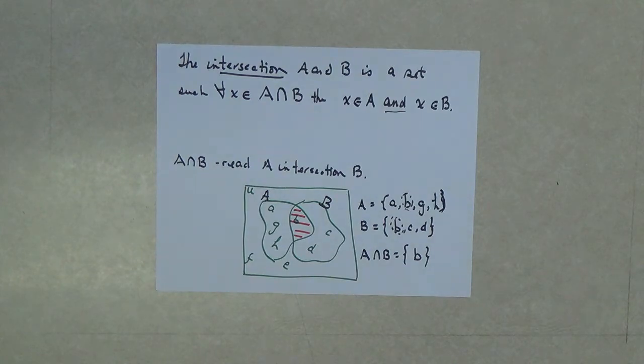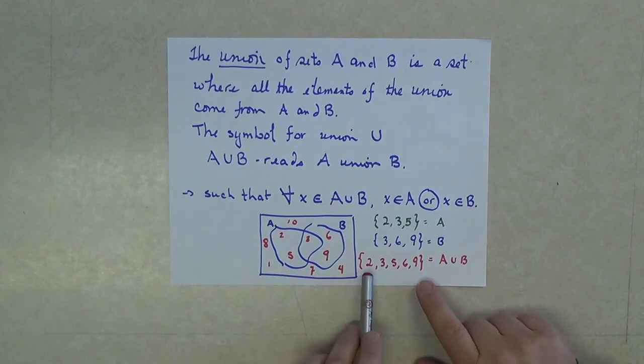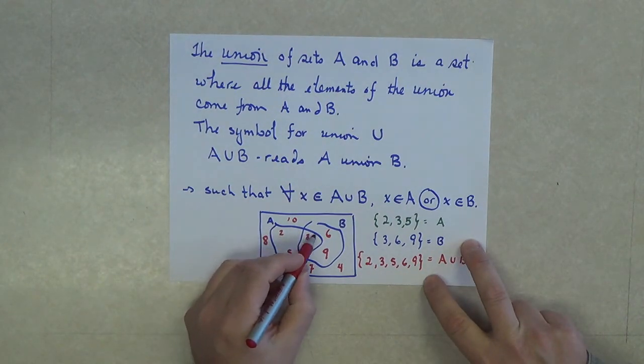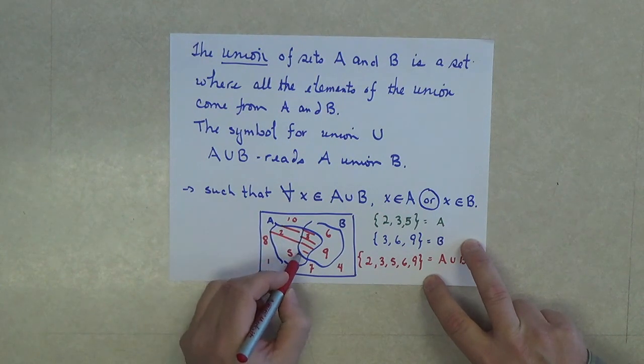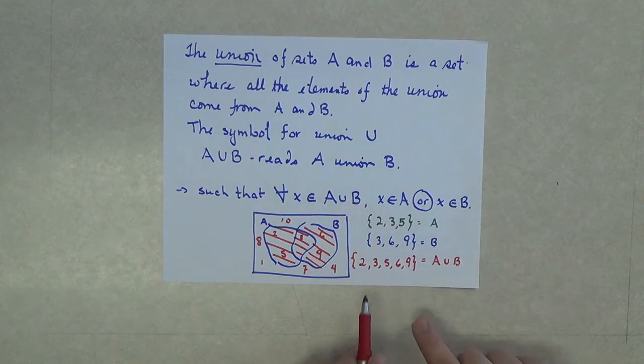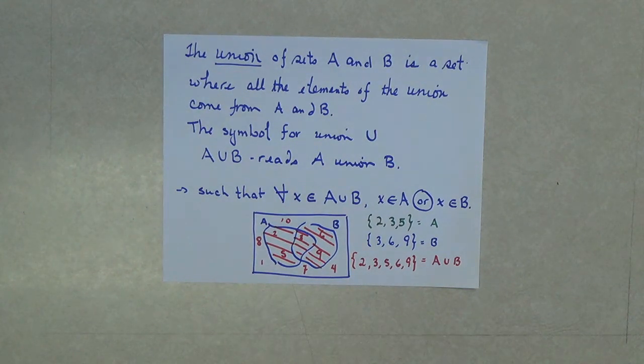Let's bring the previous sheet up and look at the Venn diagram where we were talking about unions. We found the union to be 2, 3, 5, 6, and 9. The union is not just this piece in here, though it does contain that. It's also all of set A and all of set B. It's like bringing both of them together. Some students refer to it as the combination, although it's not technically correct, but it's what is formed by putting both sets together.